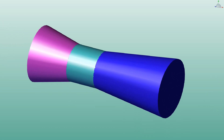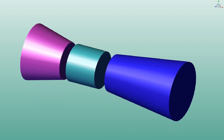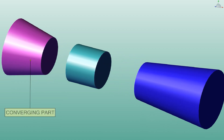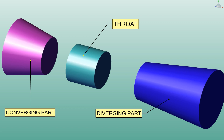Based on the color coding you can see there are three different parts. We can separate them out to understand. This is the converging part, this one is the throat of the Venturimeter, and this one is the diverging part.